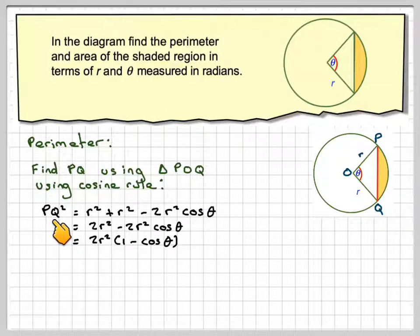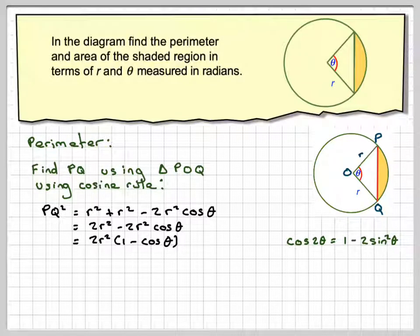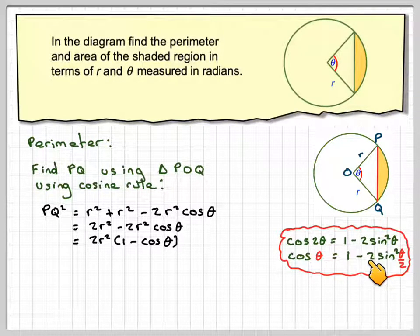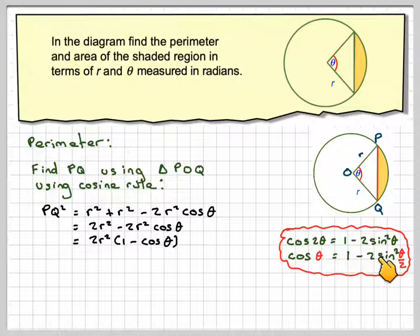Now that gives me PQ squared. I need to find PQ, so there's a little trick here you can use. We know that cos 2 theta equals 1 minus 2 sine squared theta, and therefore cos theta will equal 1 minus 2 sine squared theta divided by 2. And then we change cos theta to a squared, and therefore we might be able to take the square root of this to get a nice value.